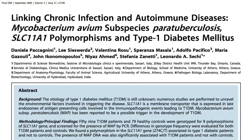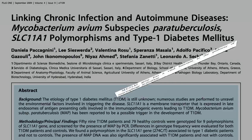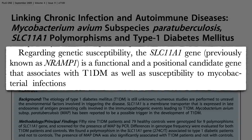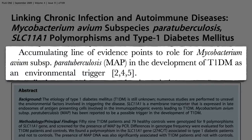The paratuberculosis bacteria also explains why type 1 diabetes risk is associated with a specific gene on chromosome 2 called SLC11A1. What does that gene do? It activates the immune cell that eats mycobacteria for breakfast. So that could explain how a mutation in that gene could increase susceptibility to type 1 diabetes by increasing susceptibility to mycobacterial infections like mycobacterium avium paratuberculosis — all part of this accumulating line of evidence pointing to it as a trigger for the development of type 1 diabetes.